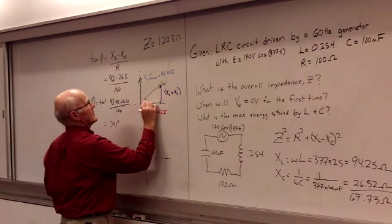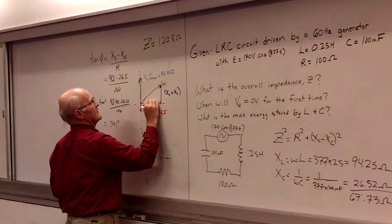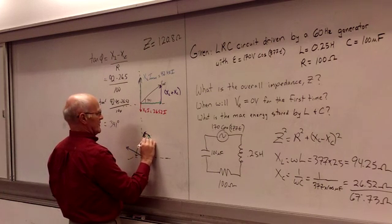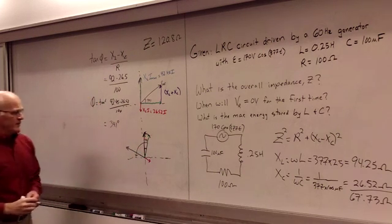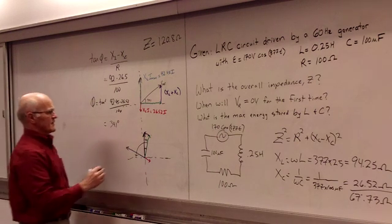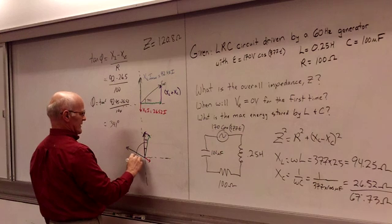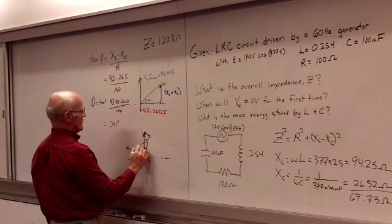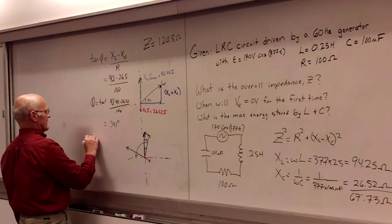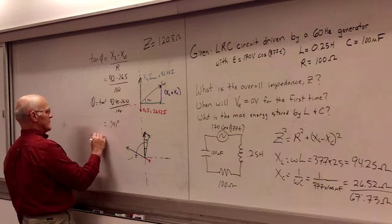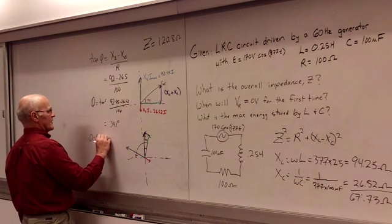So that phase angle ends up being 34.1 degrees. So we can label that in here, 34.1. And so now I have to figure out how long it's going to take for this thing to rotate through. We've got 90 degrees for this part of this angle plus the 34.1.